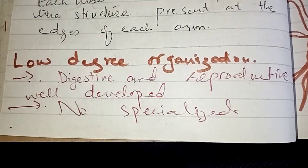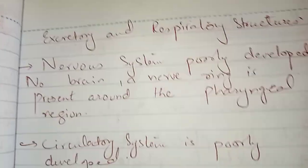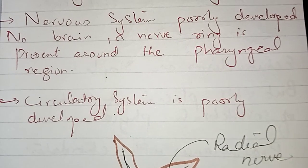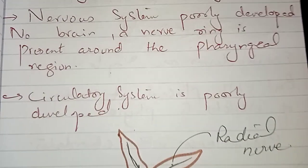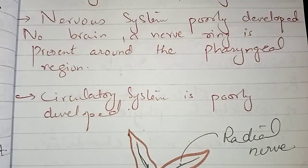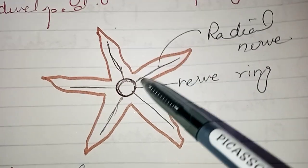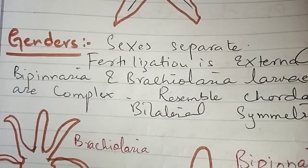If we talk about organization in echinoderms, there is not much organization. The digestive system and reproductive system are well developed, but the excretory system and respiratory system are not well developed. The nervous system is also poorly developed — there is no brain, only a nerve ring present in the central disc. This nerve ring extends into all five arms as radial nerves. The circulatory system is also not very well developed.